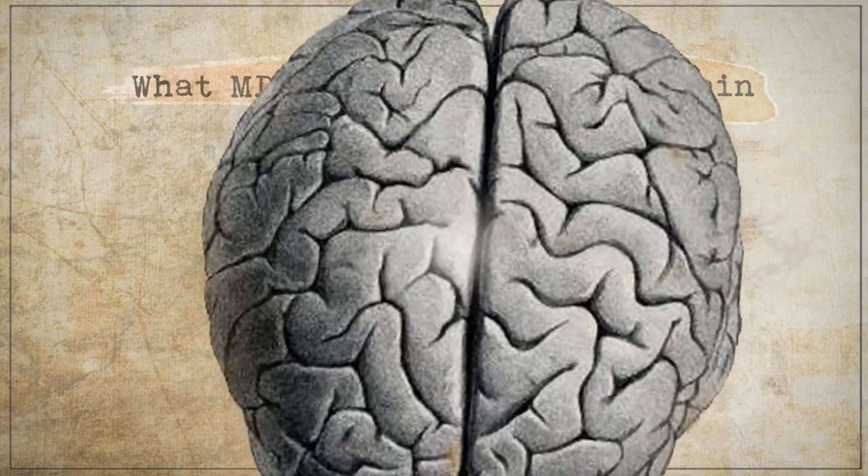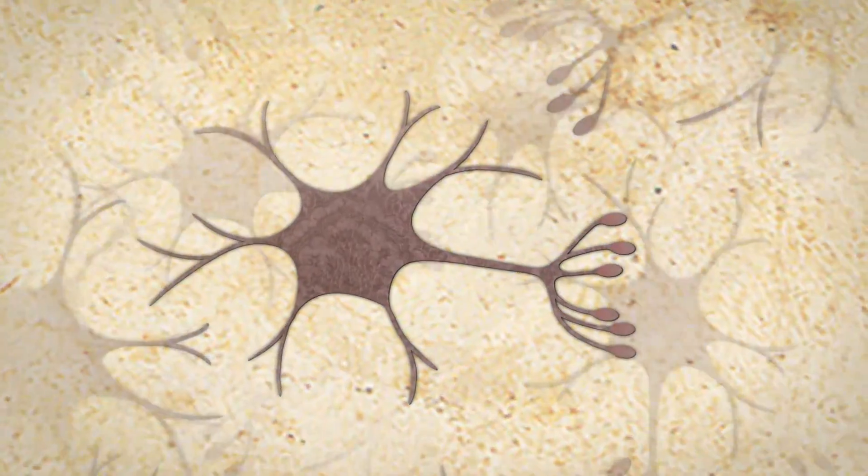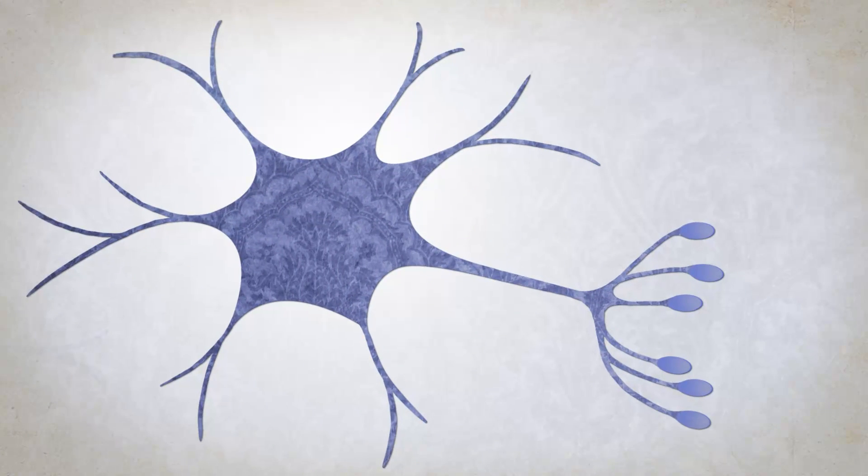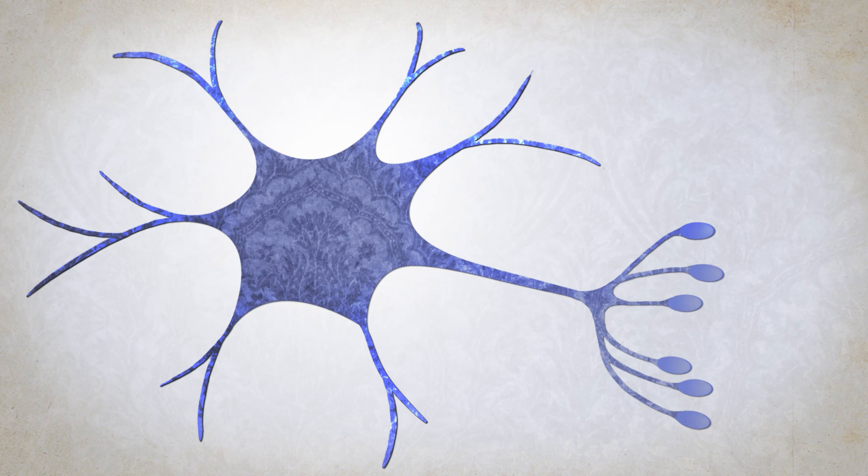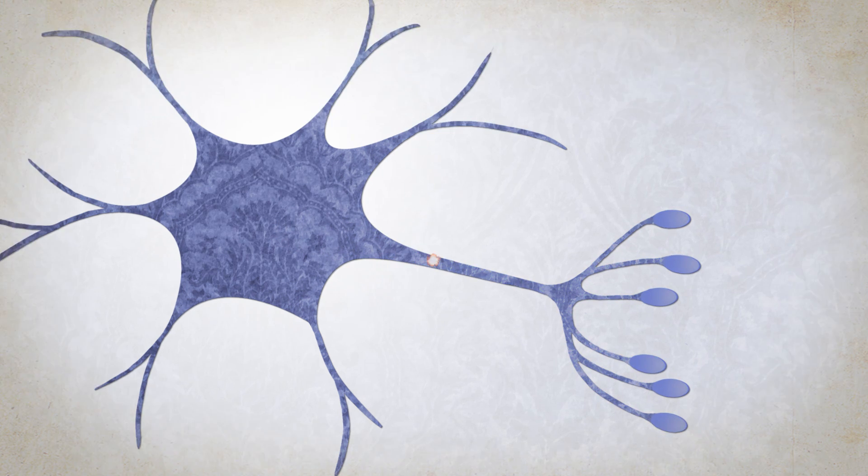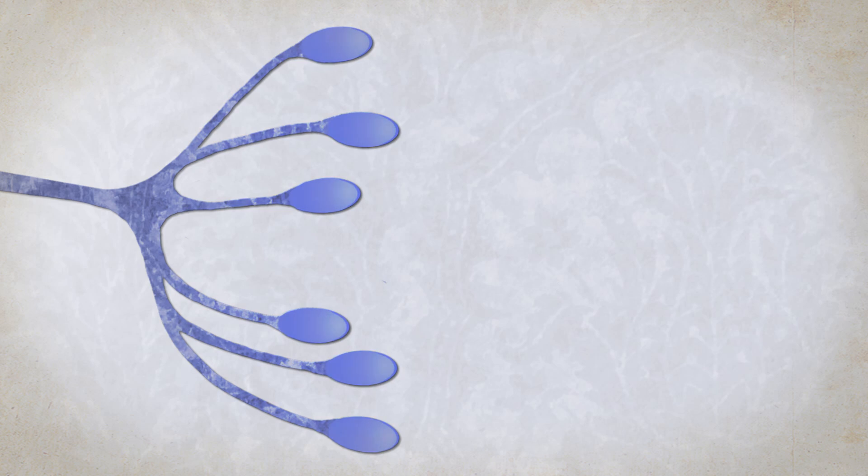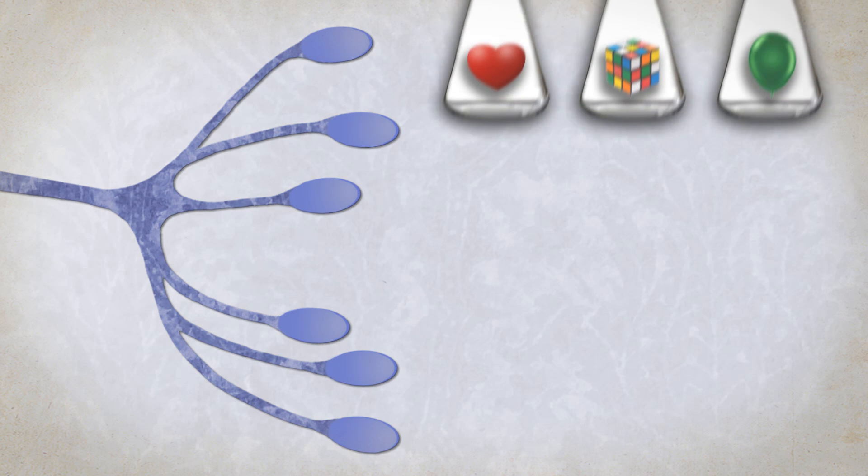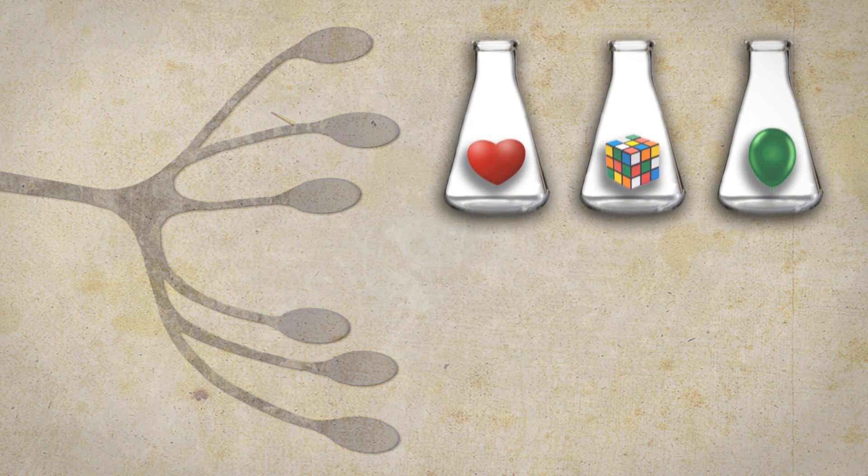Your brain contains billions of cells. They consist of a cell body, dendrites, and an axon. The cell body stores DNA and other stuff. Dendrites receive signals from other cells, and the axon carries signals from the cell body to the axon terminals. Axon terminals contain neurotransmitters, which serve to communicate with other cells.